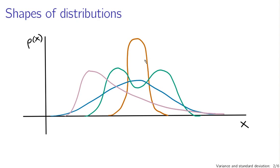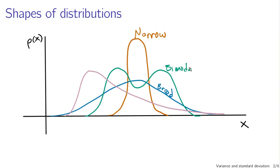These distributions are all different. The narrow peak here versus the broad distribution here. A distribution with multiple peaks, or multiple modes — in this case it has two modes, so we call it bimodal or multimodal. And then this distribution, which is asymmetric, has a long tail in the positive direction and a short tail in the negative direction. We would say this distribution is skewed.